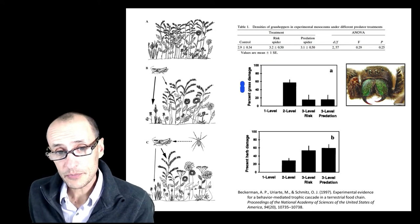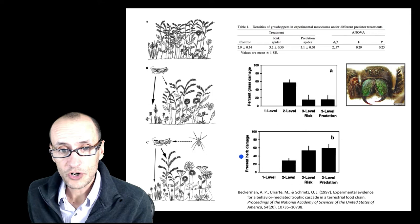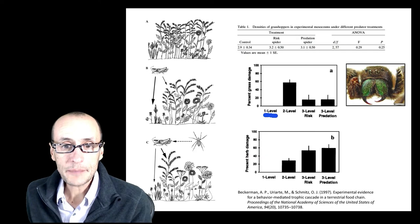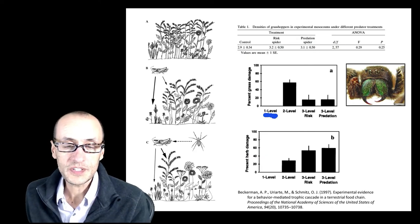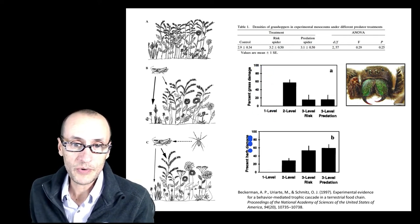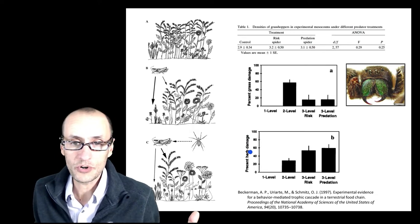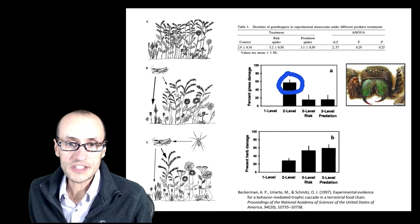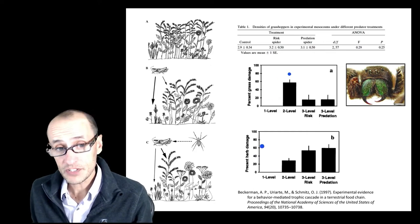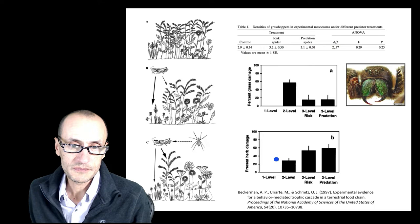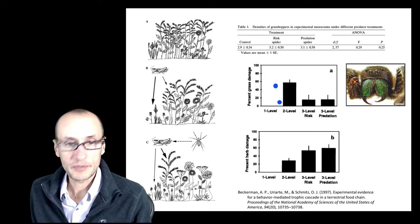When you look at this plant community here, there are grasses and there are herbs. There's forbs, broadleaf flowering plants. In the absence of any herbivores, a one-level system, he could suck out and take out all the herbivores from these, you had no damage to either the grasses or the herbs that were there. This makes sense. There's no herbivores. When you add the grasshoppers in there, you actually see an increase in herbivory. This makes sense. And a little bit of an increase in the damage to the herbs. Not as much. These are grasshoppers that actually prefer the grasses.